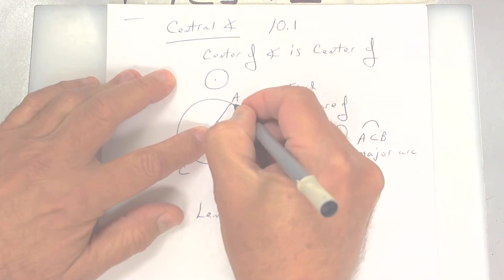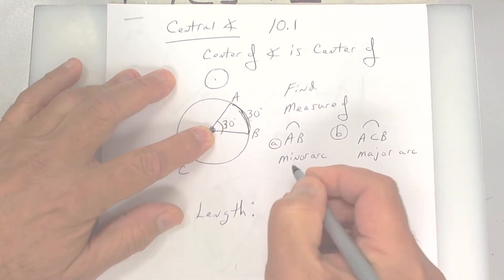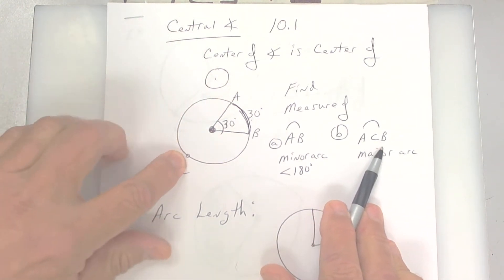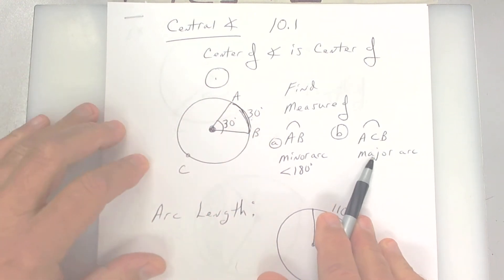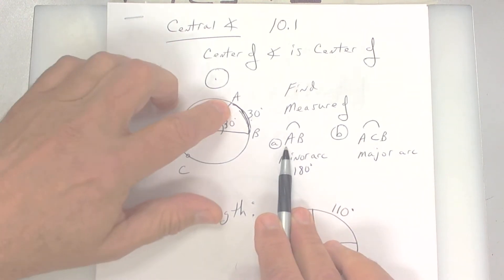This is called a minor arc. A minor arc is less than 180. This one right here, A, C, B, is bigger than 180, and it's a major arc. So a major arc requires three letters. A minor arc requires two letters.